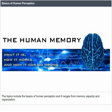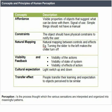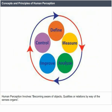The basics of human perception range from memory capacity and organization to the development of skill and expertise. The characteristics of everyday reasoning and decision making are associated areas. Perception is the process through which various sensations are interpreted and organized into meaningful patterns. Human perception involves becoming aware of objects, qualities or relations by way of the sense organs.